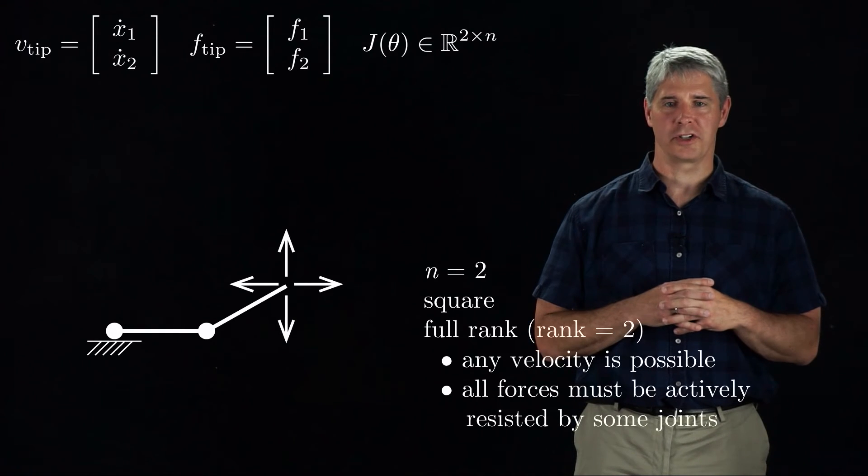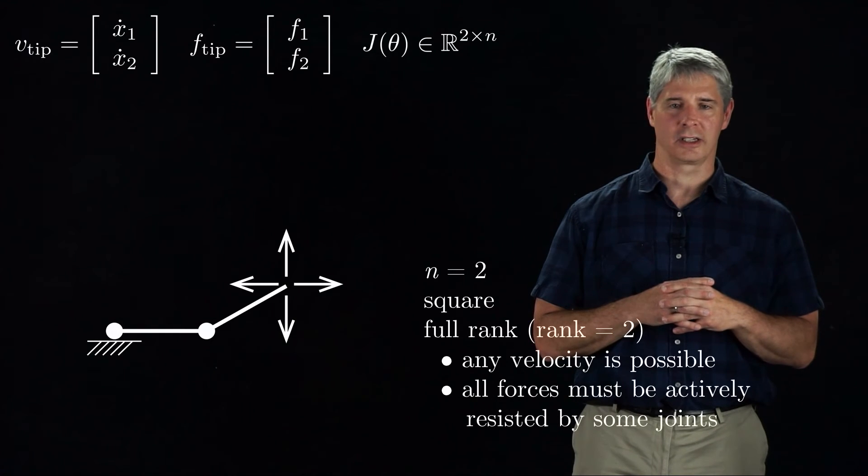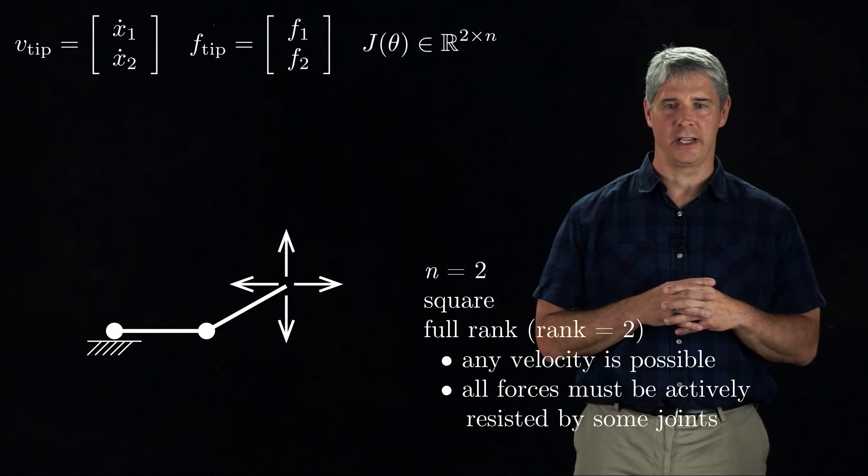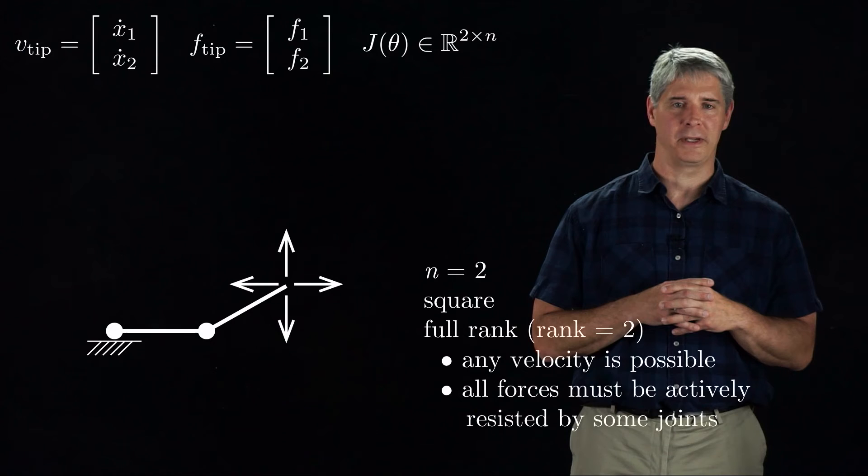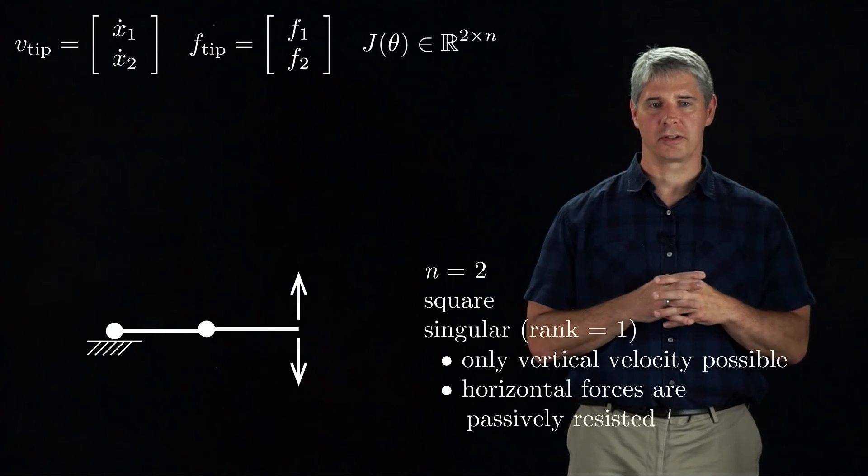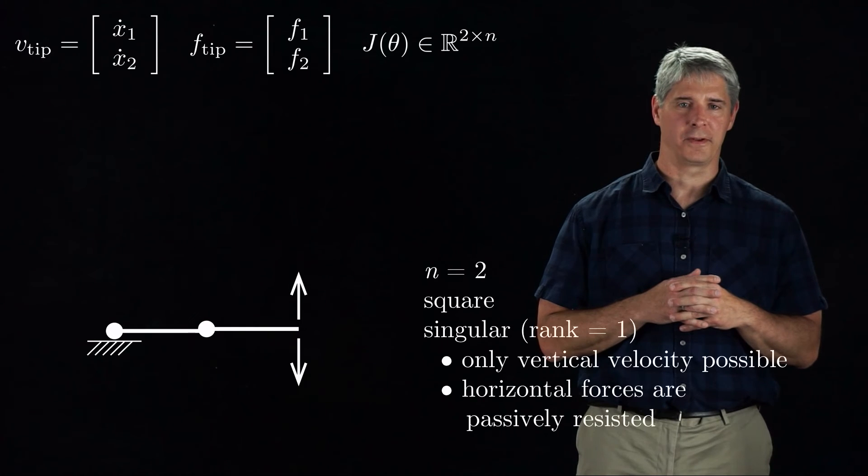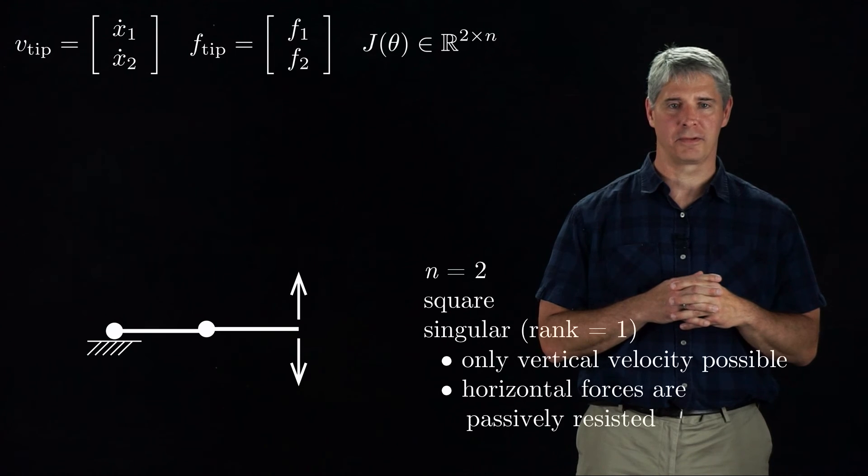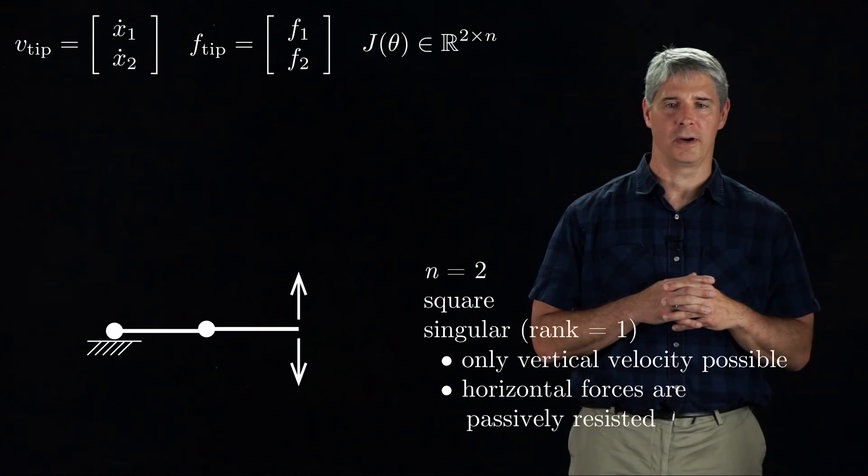This 2R robot has a square Jacobian that has rank equal to 2 at the configuration shown. This means that any tip velocity is possible, and any force applied to the tip must be actively resisted by the joints. In this picture, the 2R robot is at a singular configuration, where only vertical velocities are possible, and horizontal forces can be passively resisted by the mechanical structure of the robot.